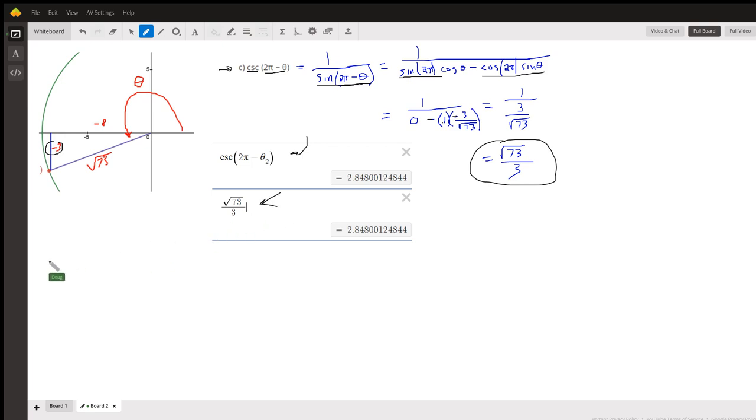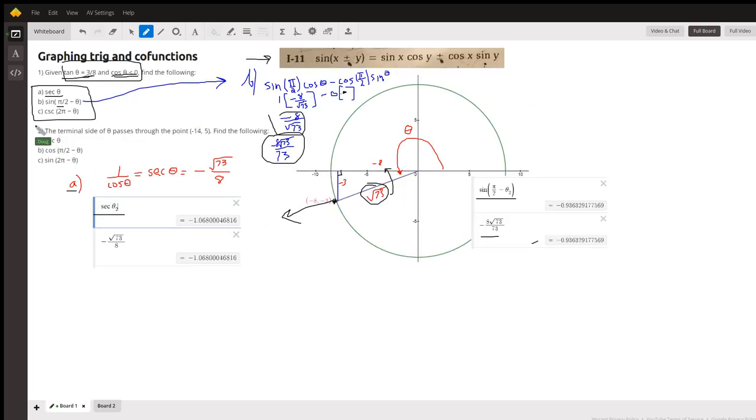Okay, for problem two on board one, follow the same pattern, but you'll have to look up the formula for the cosine of the difference of two angles. There you go, hope that helped. If you have any questions, post a comment.